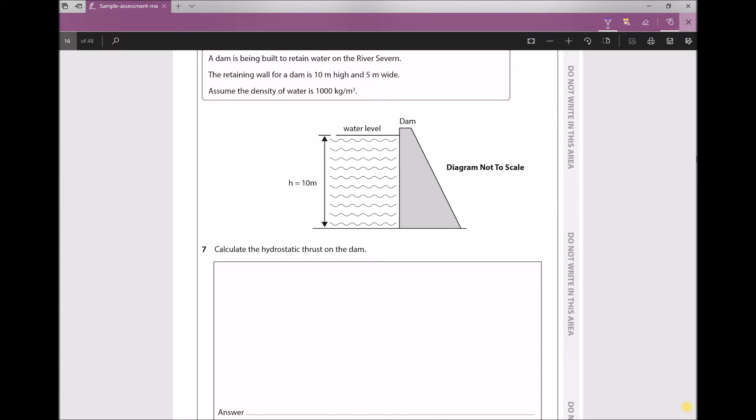Now, all we need to do to solve this question is determine the pressure at the midpoint of the fluid depth, or a depth of 5 meters, and we need to multiply that by the area of the dam that's in contact with the fluid, because we know that force is pressure times area.